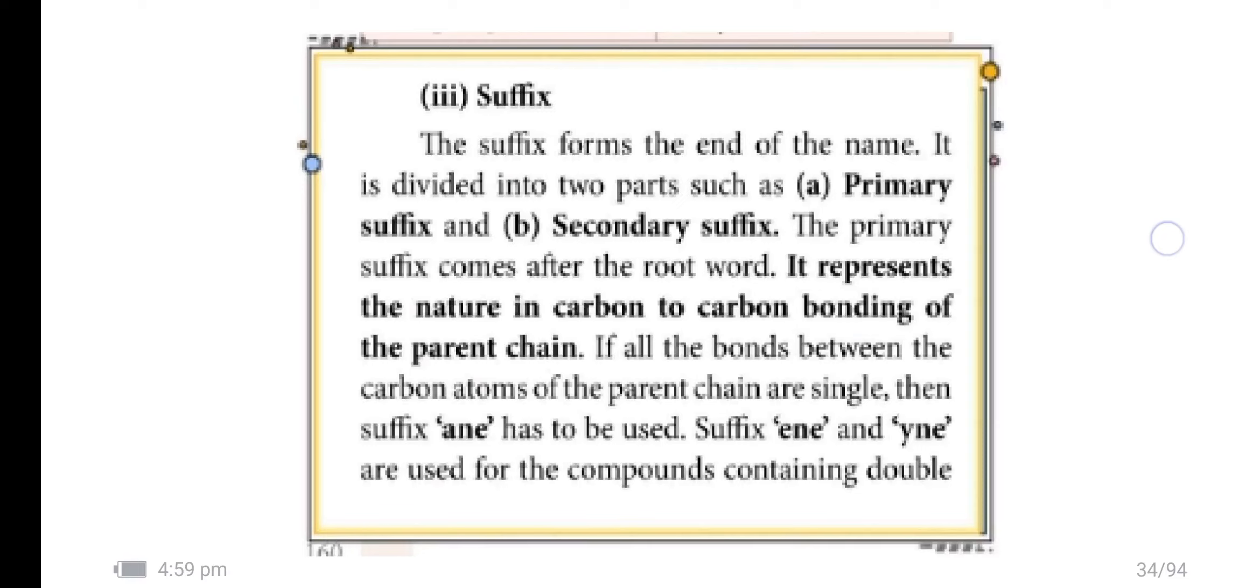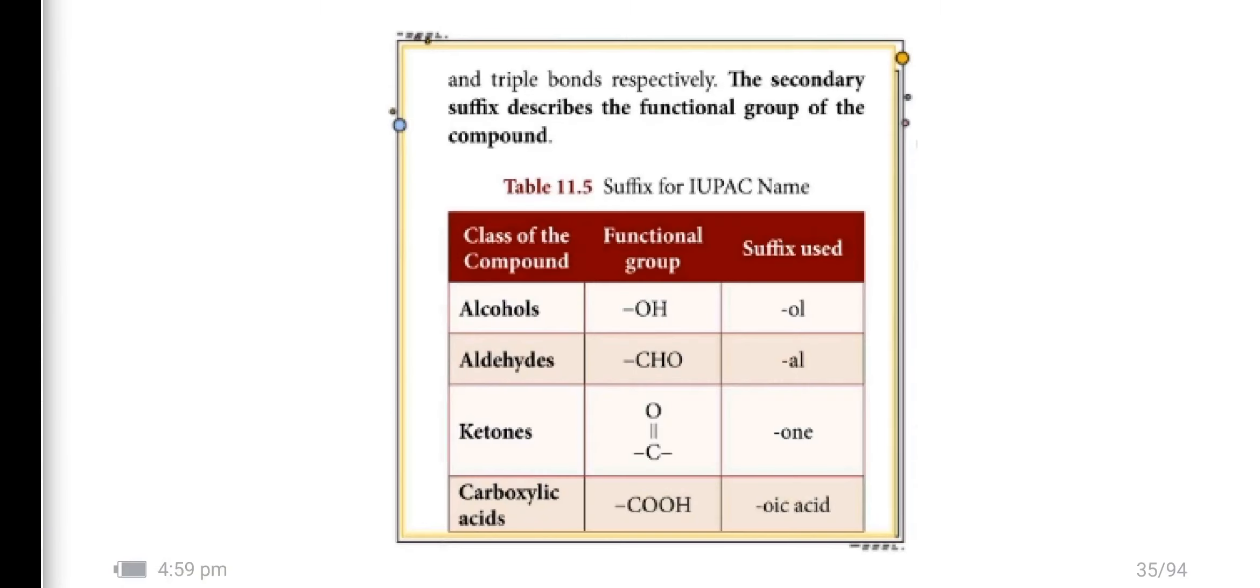The secondary suffix describes the functional group of the compound. For alcohol it is 'ol', for aldehyde 'al', for ketone 'one', and for carboxylic acid 'oic acid'.